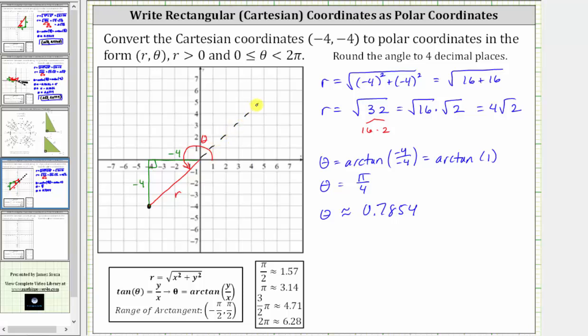So the angle given by the calculator is this angle here in the first quadrant in the opposite direction. But remember, tangent is positive in the first and third quadrants, and therefore, these two angles have the same reference angle.